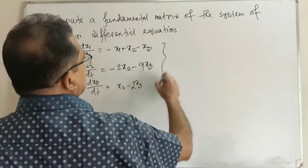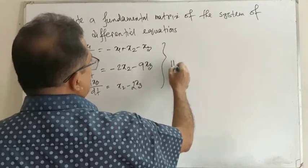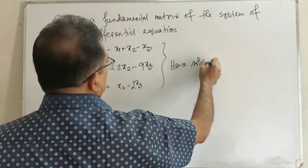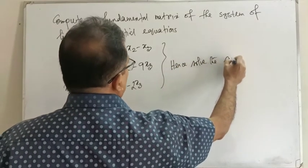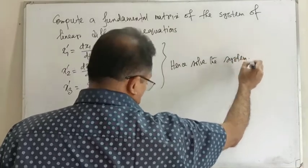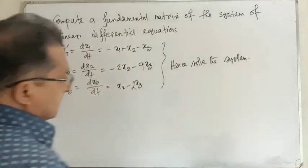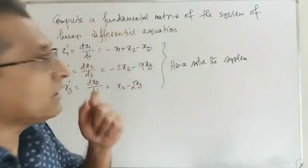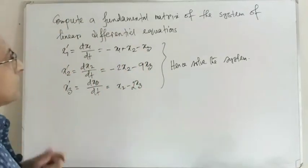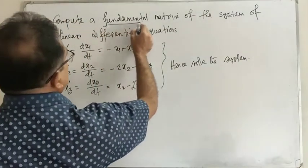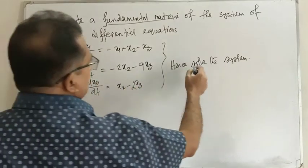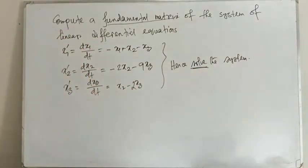This is the system of equations. We can solve the fundamental matrix. The given system can be written as x1 prime, x2 prime, x3 prime.